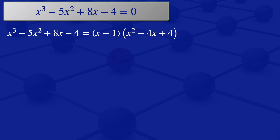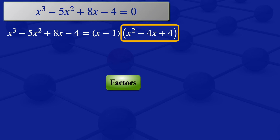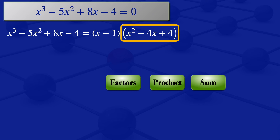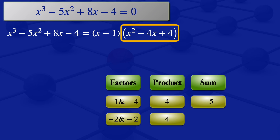The part x squared minus 4x plus 4 is a quadratic, so we can try to factor it. We look for factors of 4 which multiply to give 4 and add to give minus 4. Both factors must be negative for their product to be positive 4. Trying minus 1 and minus 4: product is 4 but sum is minus 5 — not what we need. Trying minus 2 and minus 2: product is 4 and sum is minus 4, which is exactly what we're looking for.